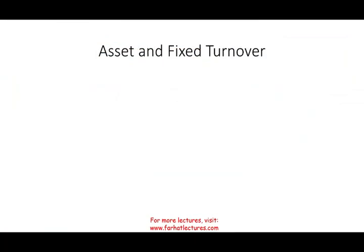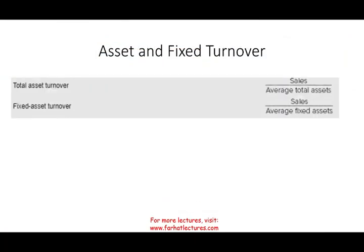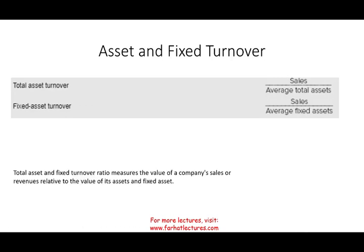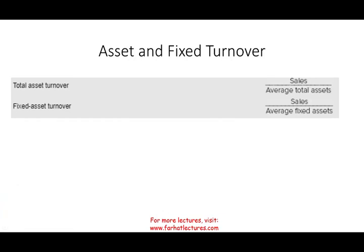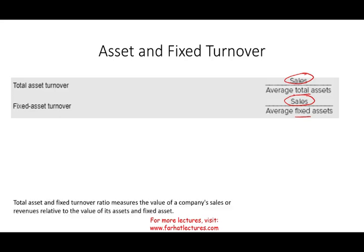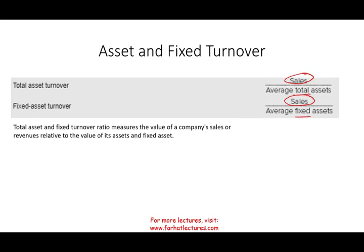The first set of ratios we're going to look at is total asset and fixed asset turnover. I've put them together because they are similar. The numerator is sales in both cases — we're taking sales and dividing by a different number: sales by total average assets, and sales by fixed assets. Those ratios measure the value of company sales or revenue relative to the value of assets.